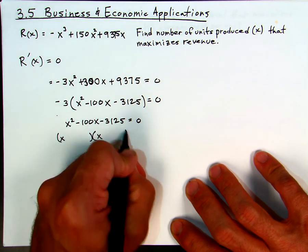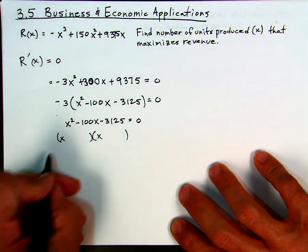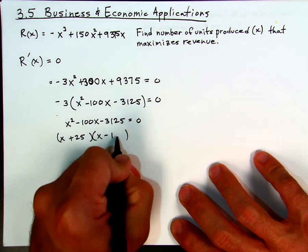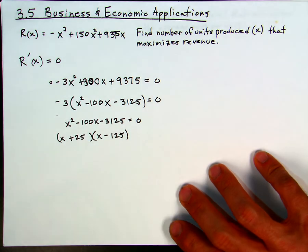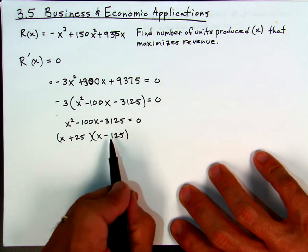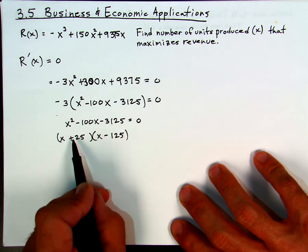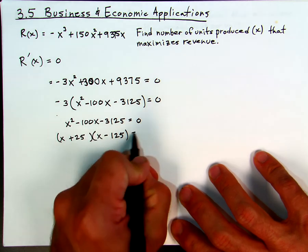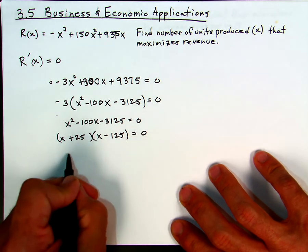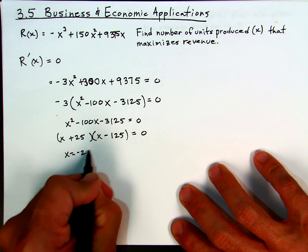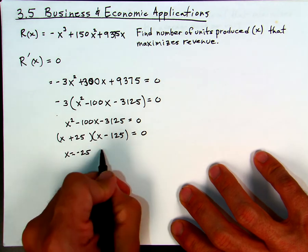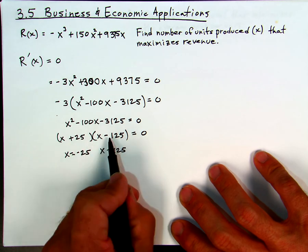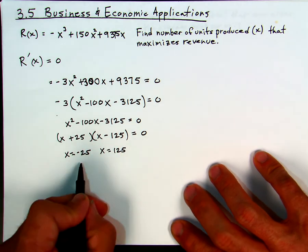Clearly, the negative 3 doesn't have anything to do with making this zero. This whole thing will be zero when x squared minus 100x minus 3,125 equals zero. That actually factors into (x + 25)(x − 125), since 25 times negative 125 gives negative 3,125, and when we add them together we get negative 100. Setting that equal to zero: this will be zero when x equals negative 25, and this factor will be zero when x equals 125.